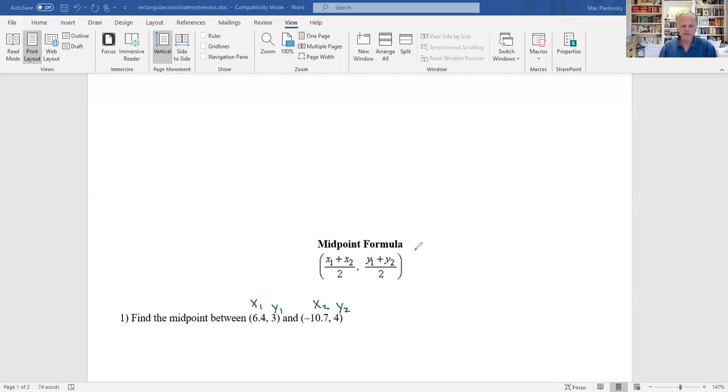So this way we can keep it straight. So the midpoint here, x1, if you look over here, that's 6.4. x2 is negative 10.7, and that's over 2. And then there's a comma. And then we have y1, which is 3. y2 is 4, and that's over 2. So what we're actually calculating is the x coordinate of the midpoint and the y coordinate of the midpoint.